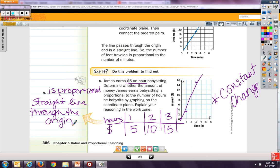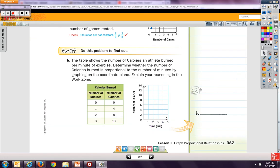So there's a couple more examples, but I'm not going to work through example two. I'm going to go to the got it problem on the next page, on page 387. So this says this table shows the number of calories an athlete burned per minute of exercise. Determine whether the number of calories burned is proportional to the number of minutes by graphing on the coordinate plane. Explain your reasoning in the work zone. So we've already gotten our table. Now we need to use our table and graph it. So we'll take number of minutes and we'll make that x, and we'll do number of calories and make that y. So number of minutes: zero equals zero. Our first thing, it must pass through the origin.